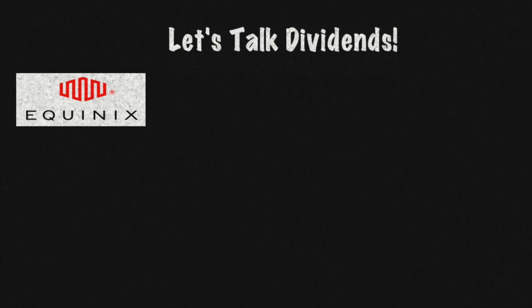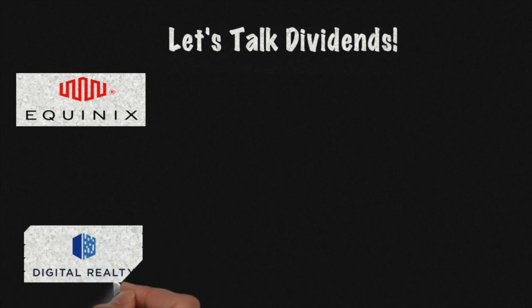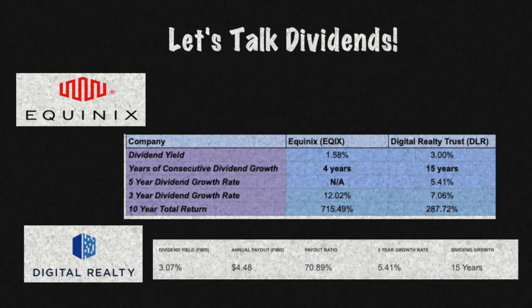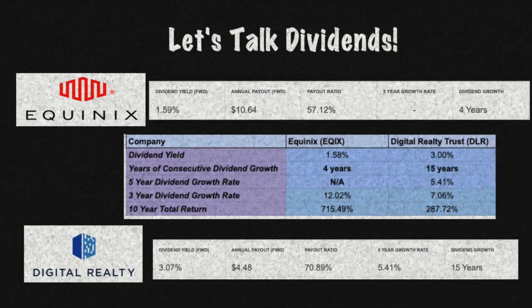Now, the part that you really want to know about is those sweet, sweet dividends. While DLR might have a higher starting yield right now, you're going to see that's quite irrelevant in just a second. While Equinix has been paying dividends for many years, it's only been consistently raising them for four years compared to DLR's impressive 15. Therefore, a five-year growth rate isn't possible for Equinix, though they both have a decent three-year growth rate.